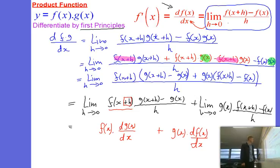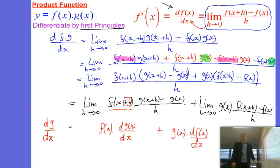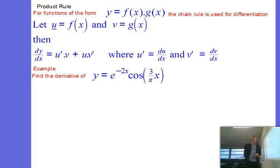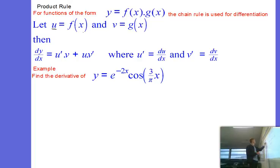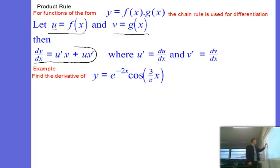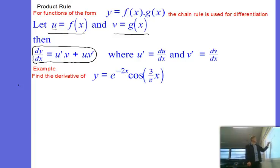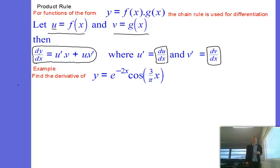And then for the second term we've got our g of x function multiplying a df of x dx. This is the gradient function for the product of two functions f and g — we call that the product rule. We can write the product rule in a simpler way. We have the product of two functions f and g, called y. If we give f and g the labels u equals f of x and v equals g of x, then u-dash and v-dash are the derivatives — u-dash is du dx and v-dash is dv dx.